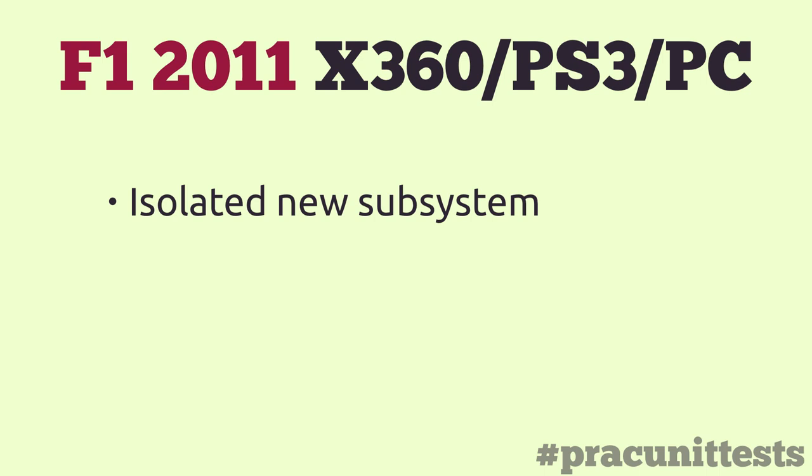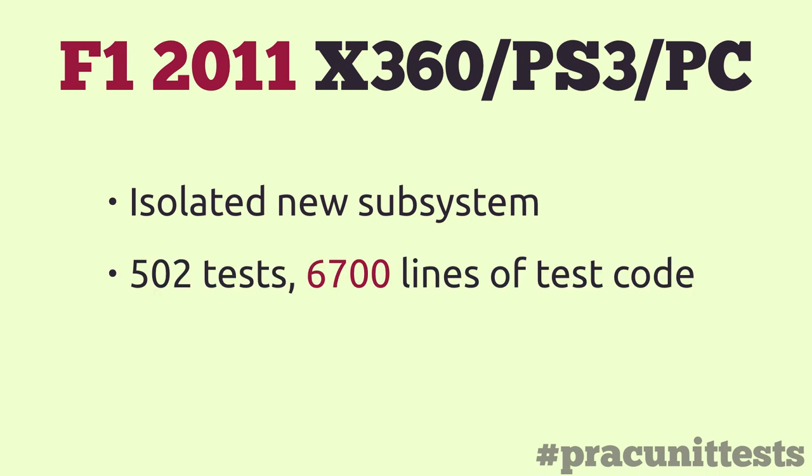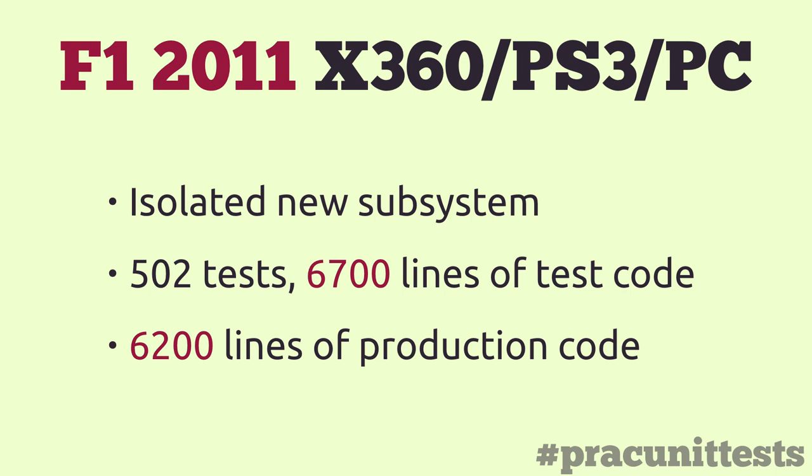So let's discuss that project I was talking about. It was F1, cross-platform. I was able to use unit tests on such a commercially-minded project as F1 — licensed IP, yearly iterations — because we had a nice new isolated subsystem. I knew I was probably going to be the only one working on it. It was sufficiently small yet sufficiently chunky that using unit tests would be a good exercise. It was well isolated from other systems, sat on top of them, had a well-defined API. It took me about eight months to finish it, and by the end it had about 502 tests — about 6.7 thousand lines of test code supporting 6.2 thousand lines of production code. So roughly a one-to-one correlation. But was it a good idea? It was a partial success. I was happy that I did it and I would do it again, but there are things I'd like to improve.